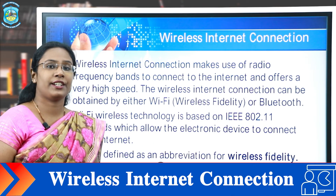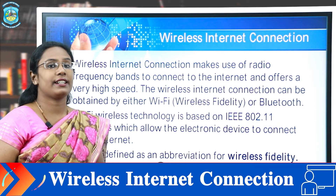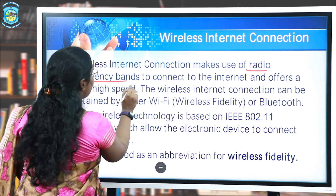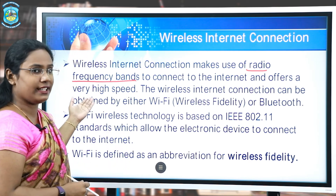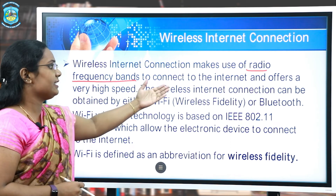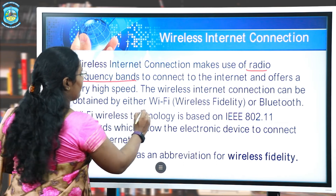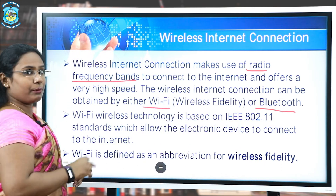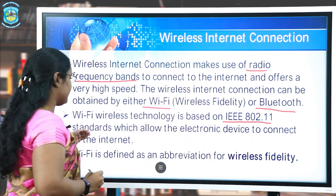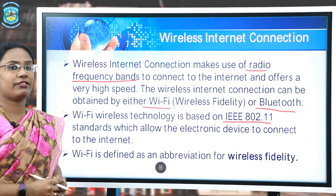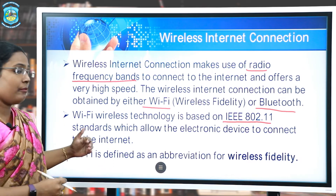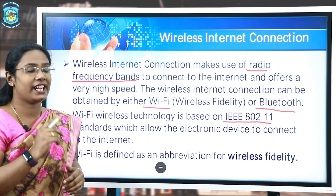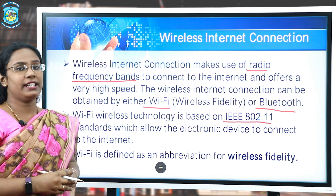The next type of internet connection, which we mostly use nowadays, is wireless internet connection. It makes use of radio frequency bands to connect to the internet and offers very high-speed internet connection. The wireless internet connection can be of two types: first is Wi-Fi, that is Wireless Fidelity, or Bluetooth connection. This technology is based on IEEE 802.11 standards which allows electronic devices to connect to the internet. The term Wi-Fi stands for Wireless Fidelity, meaning you can connect to the network with the help of radio waves and do not require any cable lines.